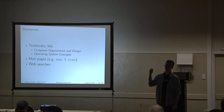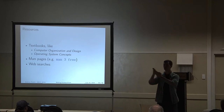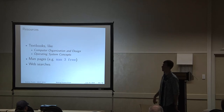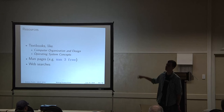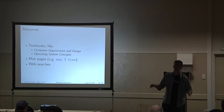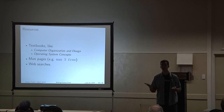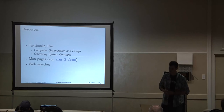If you just type man free, it searches through the numbers in the man pages directory and the first thing it will find is the program free — that is not what you're looking for. So you have to specify section three to get to the free function. All the standard C library functions are documented in there in some way, and it also gives you caveats and a lot of times use cases.